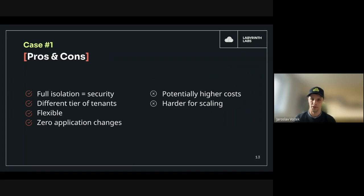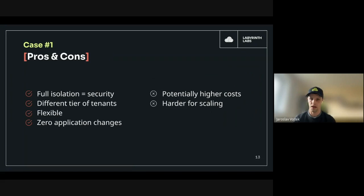The cons of this setup include potentially higher infrastructure costs, since each tenant has its own deployment requiring dedicated memory, CPU, disk space, and databases. Not sharing the application across tenants can result in higher overall costs. This kind of setup is also harder to scale because you must dynamically deploy the application per tenant and dynamically provision infrastructure parts — all of which requires its own automation.